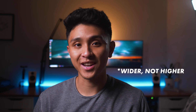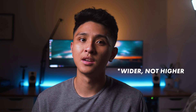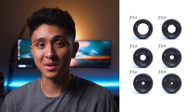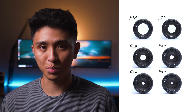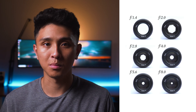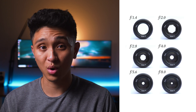Here's the tricky part — the lower the f-stop, the higher the aperture, and vice versa. It sounds confusing because it's backwards, but basically a lower number means a wider opening that lets more light in. A higher number means the opening is more narrow, letting less light in.